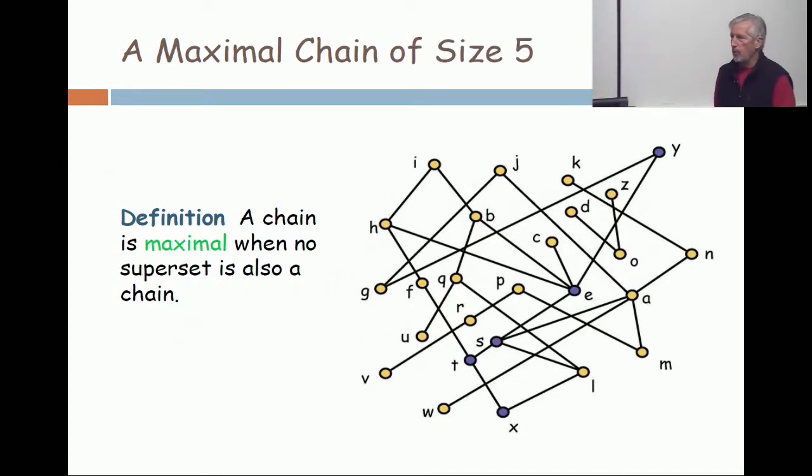Now, all I've done between this slide and the preceding slide is color another point blue. Now I have a chain of size 5, starting from the bottom X up to T, up to S, to E, and then on to Y. And that chain is maximal in the sense that you cannot color any additional point and keep the set a chain.